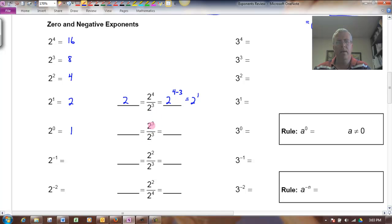If I do that in the same way with 2 cubed over 2 cubed, that would be 2 to the 3 minus 3, subtracting the exponents, which is 2 to the 0. And 2 cubed over 2 cubed, 8 over 8 is just 1. So it does make sense that 2 to the 0 would be 1 on a couple of different levels.